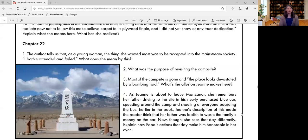So we have a few questions that go along with chapter 22. Let's take a look at them. There are four questions. Question one, the author tells us that as a young woman, the thing she wanted most was to be accepted into the mainstream society. I both succeeded and failed. What does she mean by this?